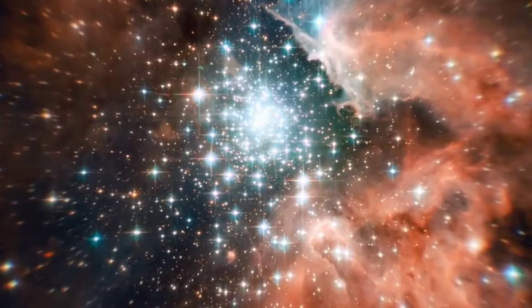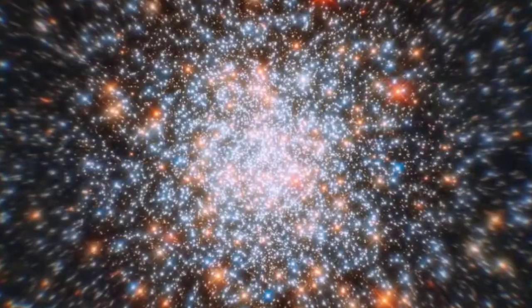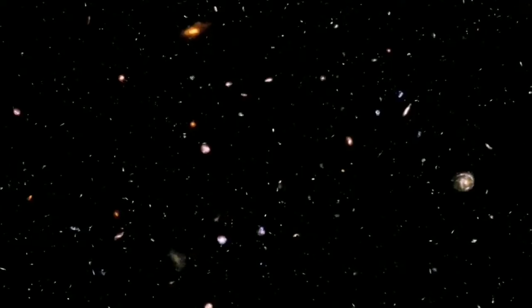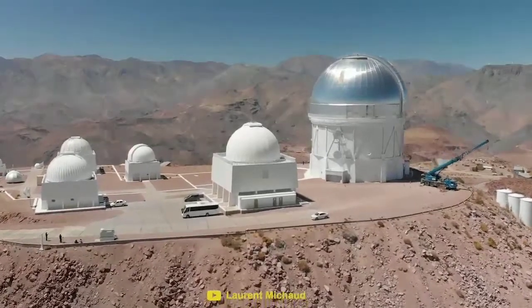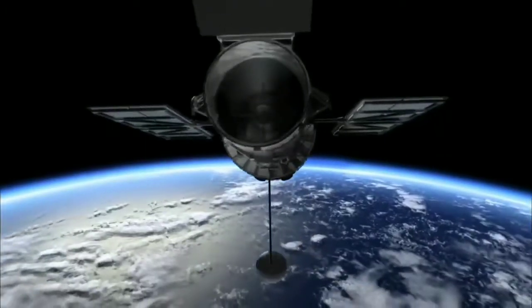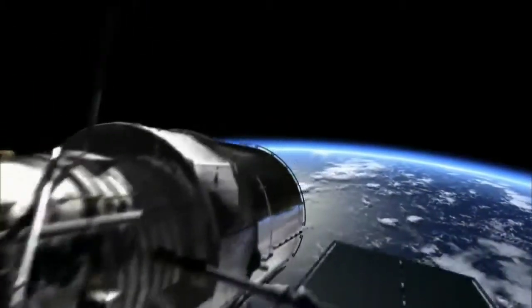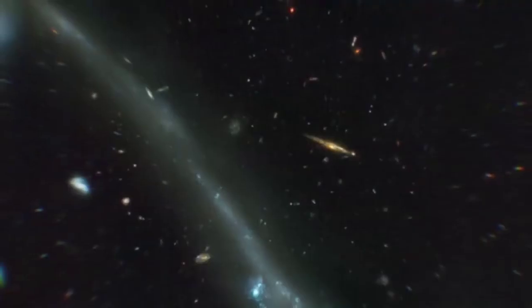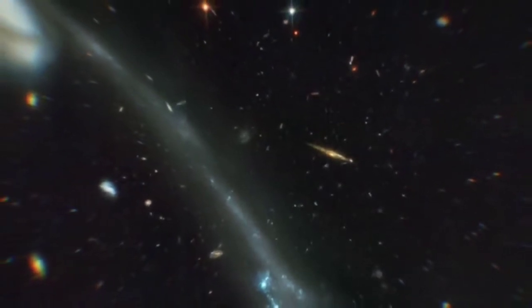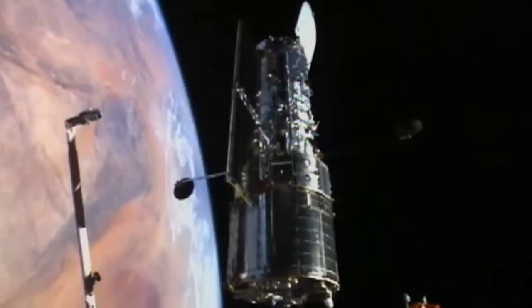Throughout its lifetime, Hubble has taken millions of amazing pictures. It's able to observe other parts of the electromagnetic spectrum that an ordinary telescope couldn't see. Since it's outside of Earth's atmosphere, it has an unobstructed view of the universe, which allows it to capture objects that are dimmer and much more distant than a ground-based telescope ever could.